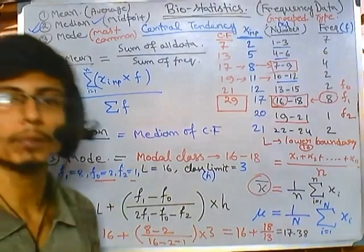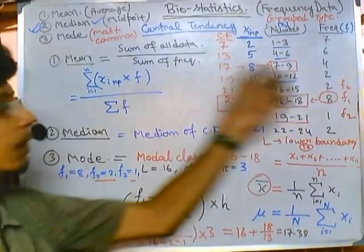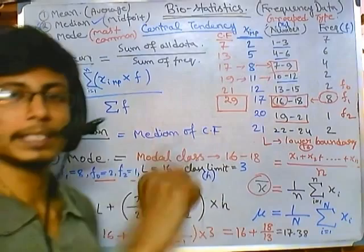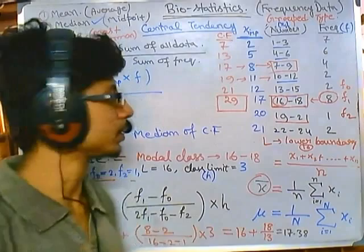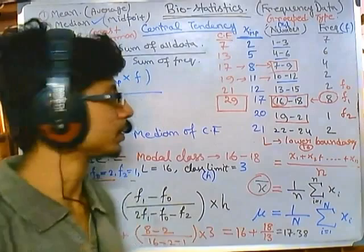That is how you calculate the mode for grouped frequency data. We have also seen how to calculate the mean, and how to find the range of the median. There is also a formula using f1, f0, and f2 to calculate the exact median, but that is not required here and may be discussed in a future video. I hope this video was helpful — thank you.